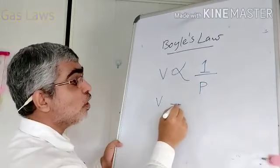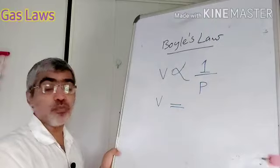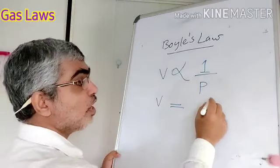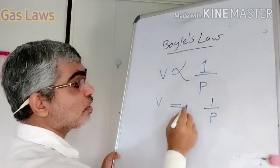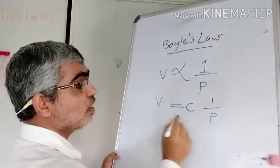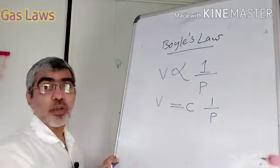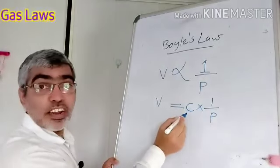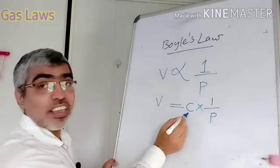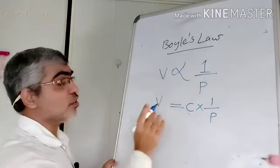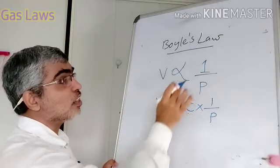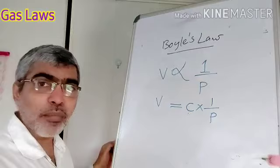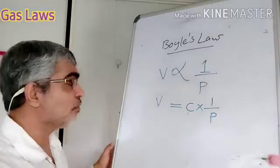We can write V equals C times (1/P), where C is a constant. So if we call the constant C, then V equals C divided by P.